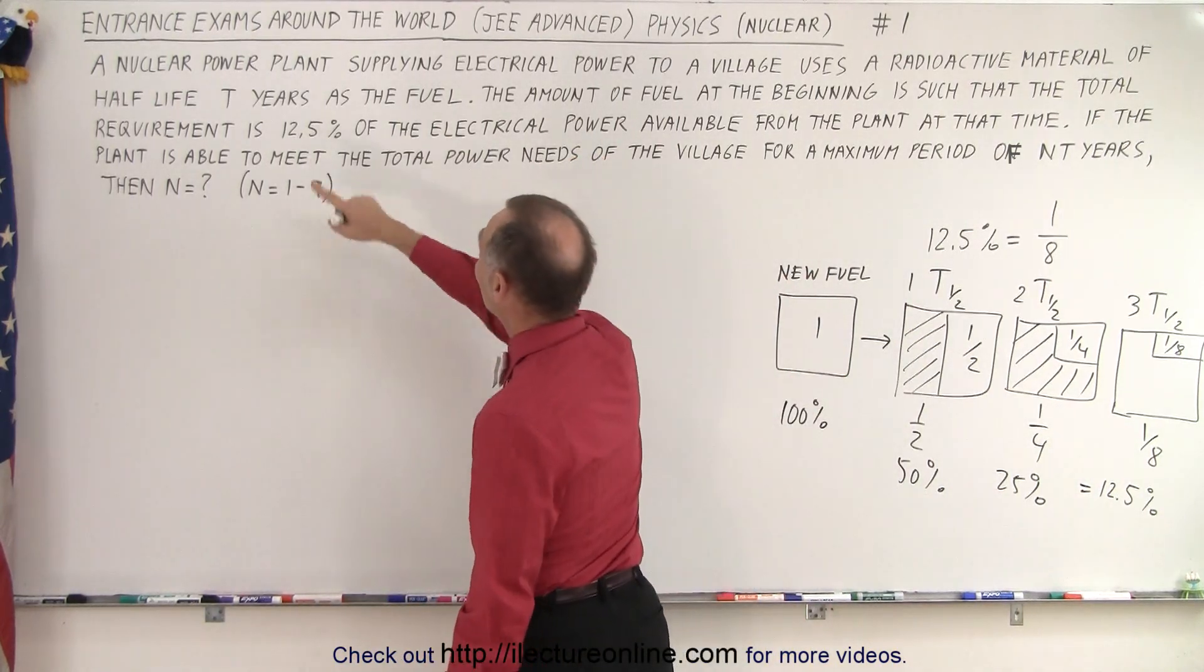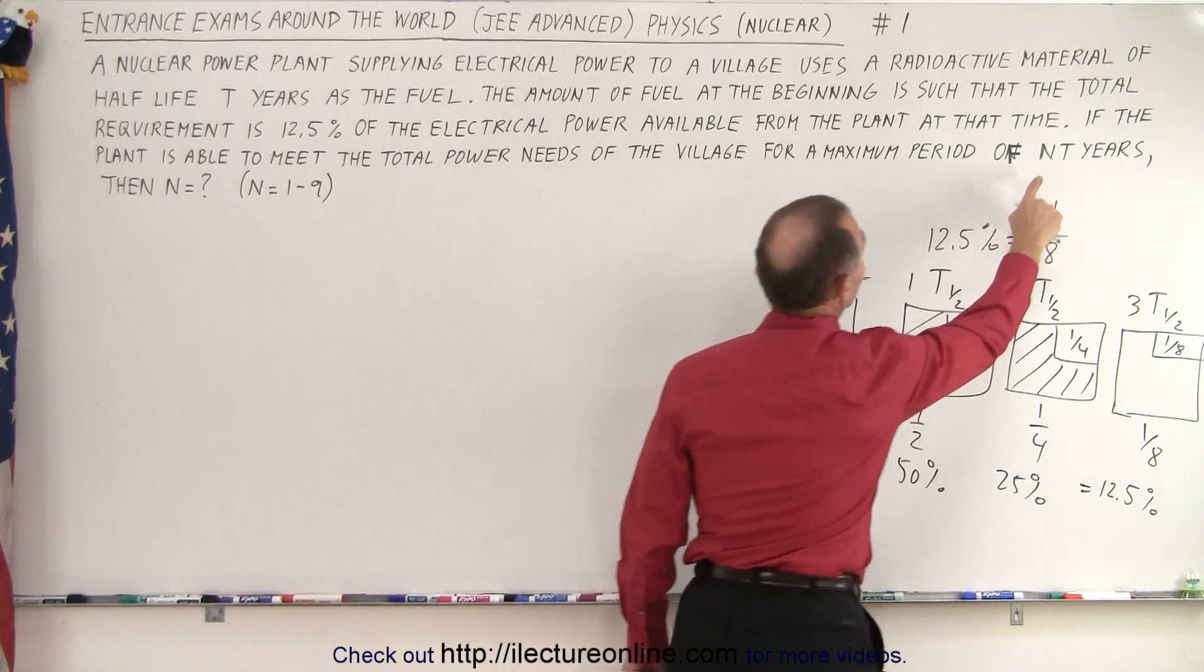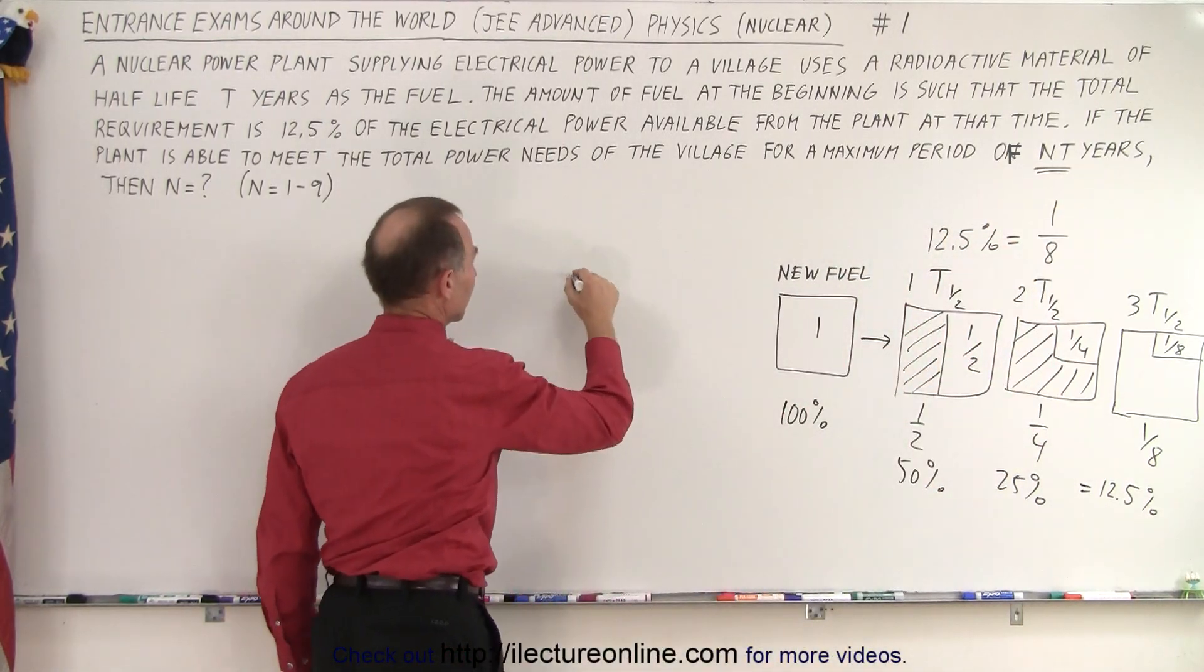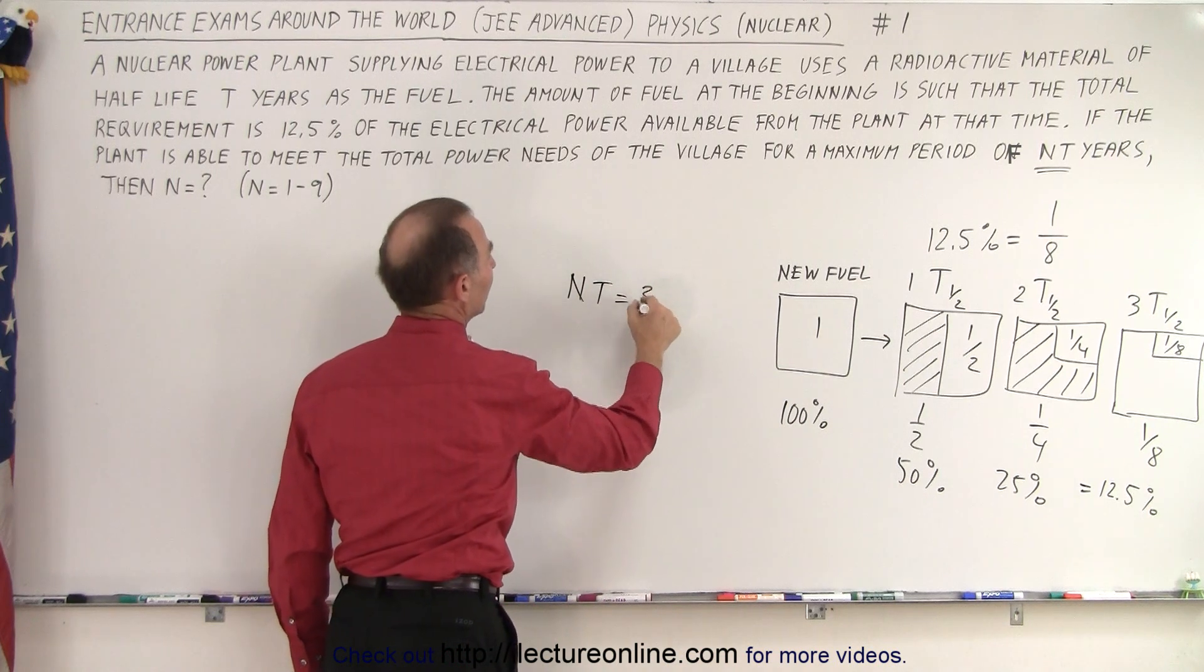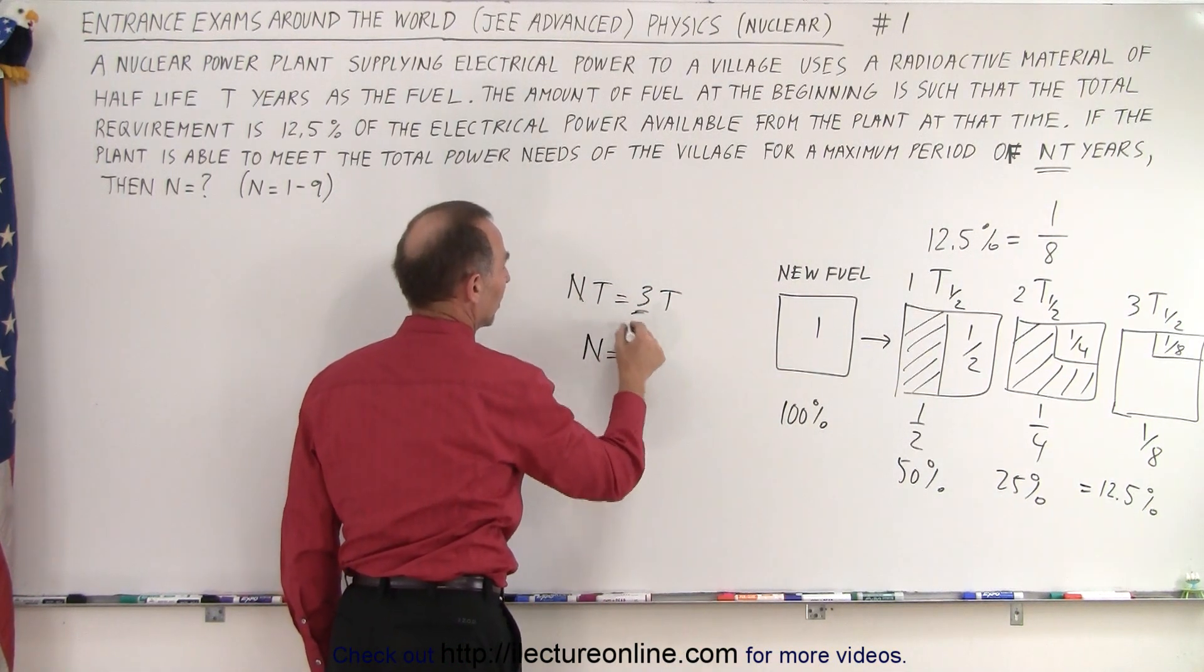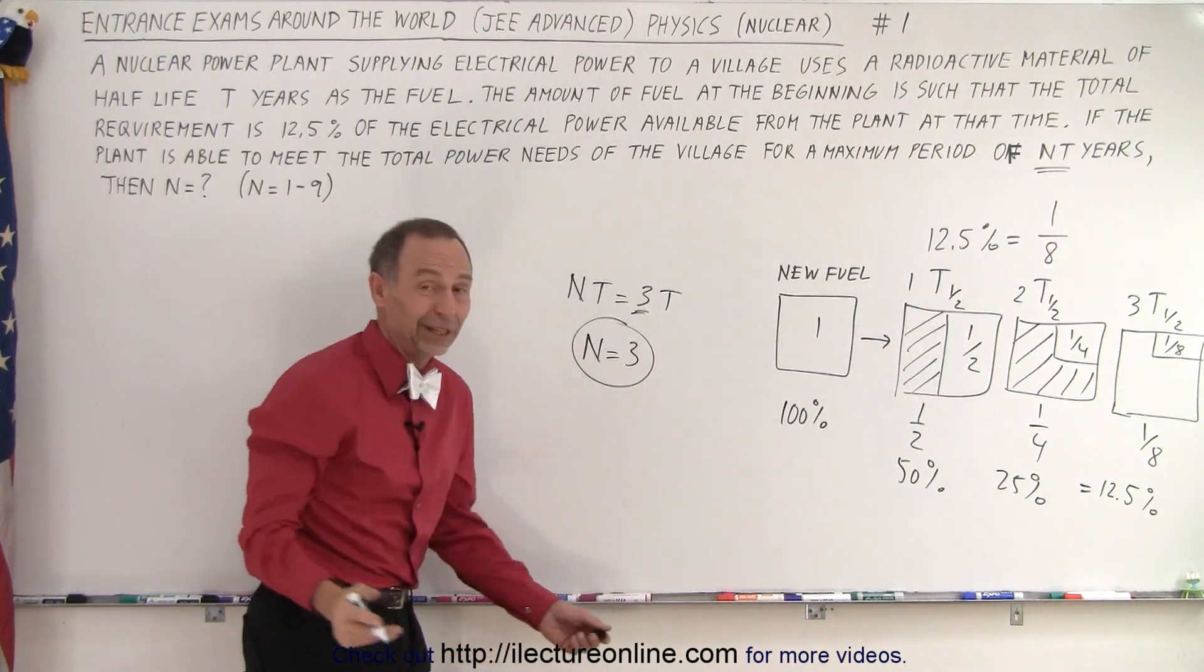Therefore, since half-life is defined as t years, then n times t equals three times t, three half-lives, so n is equal to three, that's the answer in this particular case.